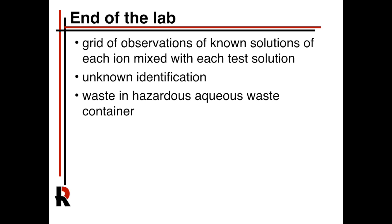At the end of the lab, you'll have these tables from your lab manual with your various observations in terms of which ones form precipitates and which ones don't. You'll have an unknown - you'll pick an unknown A or B that'll be one of the solutions - and you'll have to identify what solution that is. Hopefully all your waste is in the hazardous aqueous waste container.